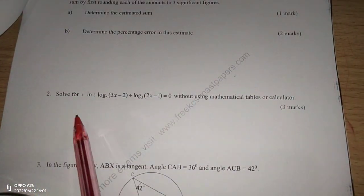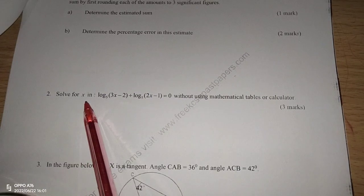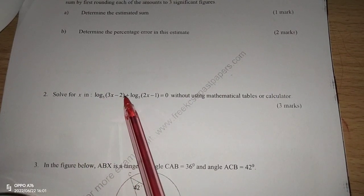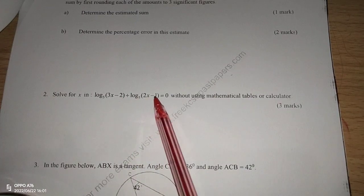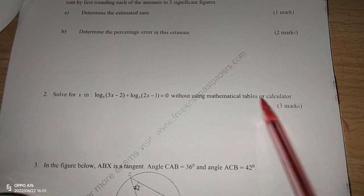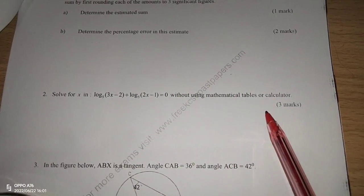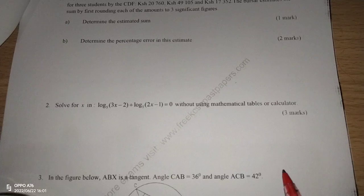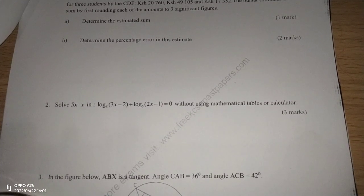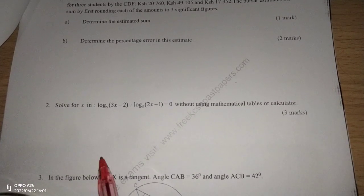We are told solve for x in the logarithm of 3x minus 2 to base 5 plus the logarithm of 2x minus 1 to base 5 equals to 0 without mathematical tables or calculator. Therefore, we're going to apply the laws of logarithms and indices, and we are going to see the solution to this question. Remember to subscribe to this channel and to also share the link with your friends.